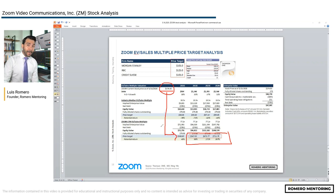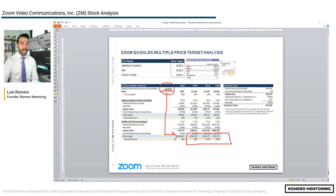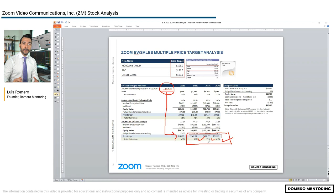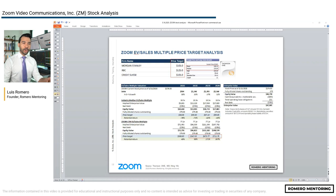I recommend going back to that lecture to understand the process and methodologies, what my frame of mind was about the company in May, and compare it to what we're doing today. When it was at $174, I said if it breaks resistance, the stock can go to $200. We had a baseline price target and potential return. Now let's open up our spreadsheet and go through this process again.